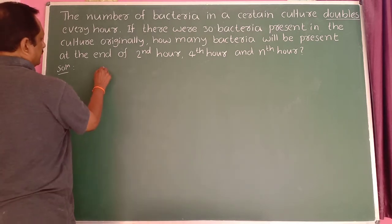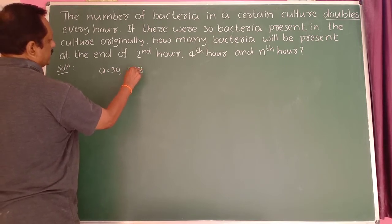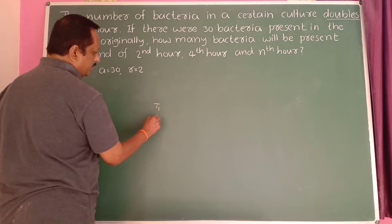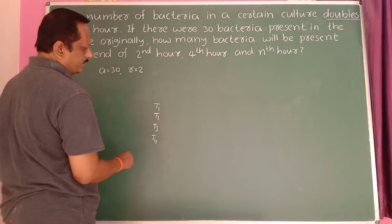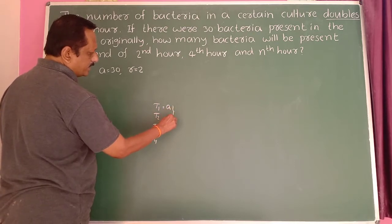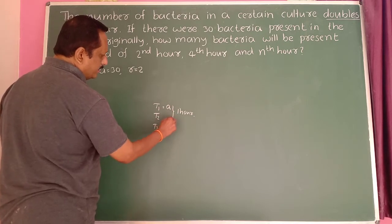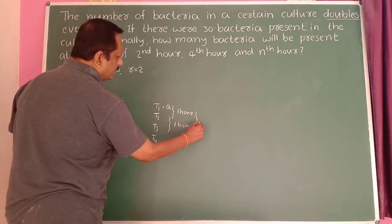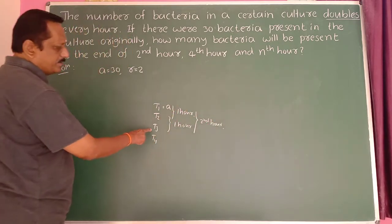So the first bacteria count, beginning a = 30, r = 2. Here T1, T2, T3, T4 and so on. T1 means evenly spaced — from here to here it is one hour. Therefore at the end of the second hour, that means T3.